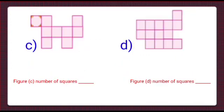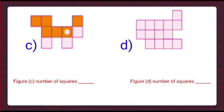Now we will move on to figure C. Counting: 1, 2, 3, 4, 5, 6, 7, 8, and 9. There are 9 squares in part C.